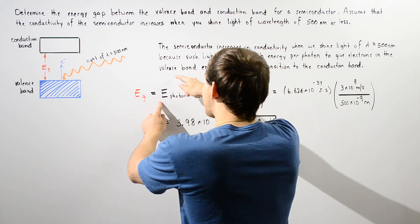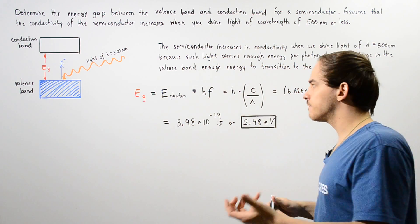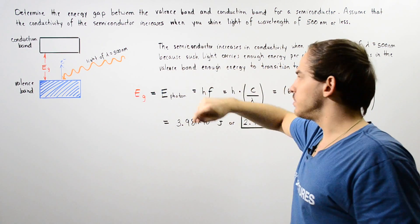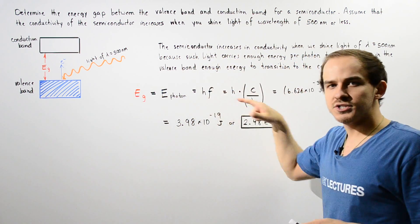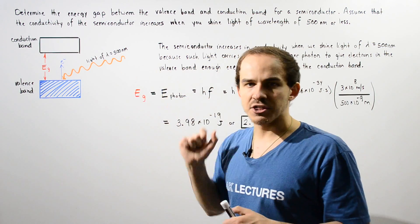So to calculate how much energy is found within one photon that has a certain frequency, we use this equation. We take the product of Max Planck's constant h and the frequency f. Now we don't know what the frequency is, but we do know what the wavelength is.